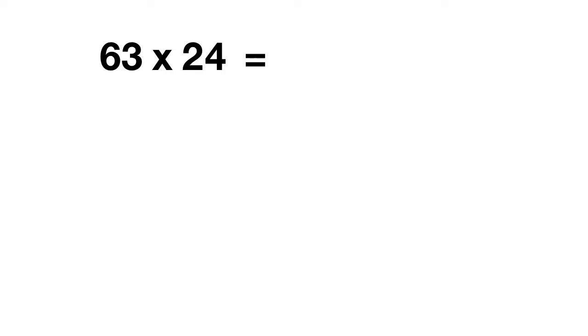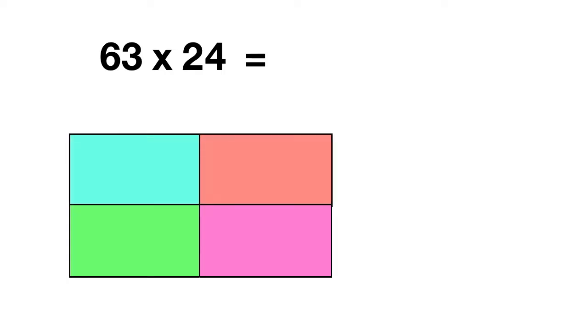The area model we're going to use is going to look like this, with four different sections. We'll start by breaking up 63. The six tens have a value of 60, and the three ones have a value of 3. We'll do the same thing with 24. The two tens have a value of 20, and the four ones have a value of 4.